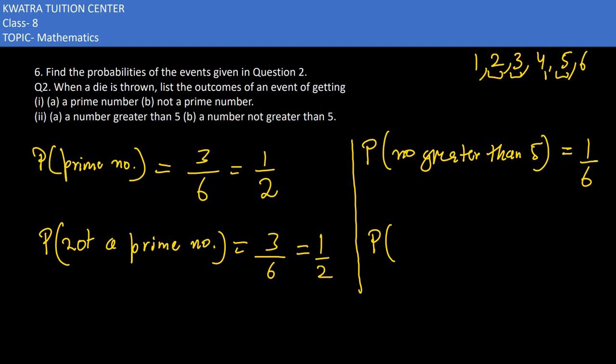It can be 4, it can be 3, it can be 2, it can be 1. So how many are they? It would be 4 out of 6. And 4/6 is nothing but 2/3.